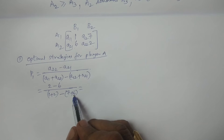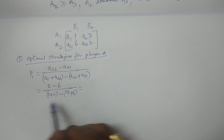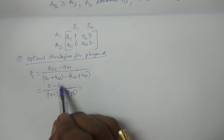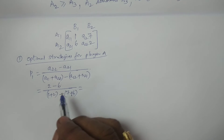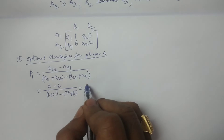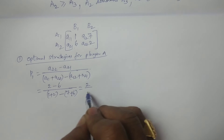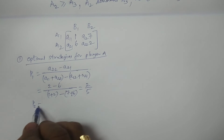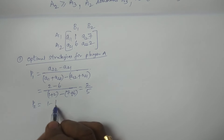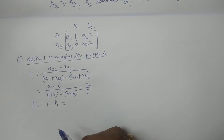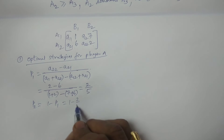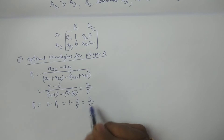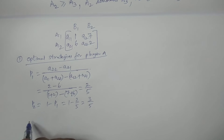Continuing the calculation: 1 + 2 = 3 for numerator part, 7 + 6 = 13 for denominator part, giving 3 − 13 = −10 in the denominator, and −4 / −10 = 2/5. So P1 = 2/5. Then P2 = 1 − P1 = 1 − 2/5 = 3/5. Both probabilities are positive, so optimal strategies are available for Player A.